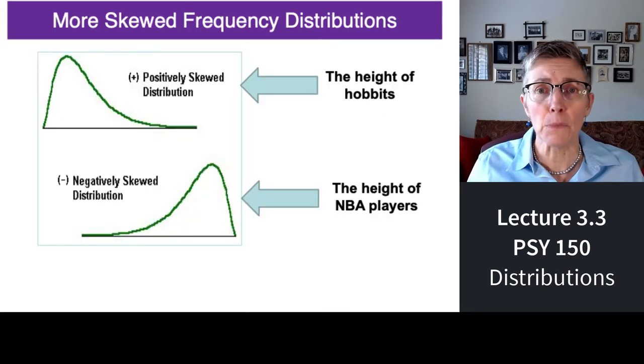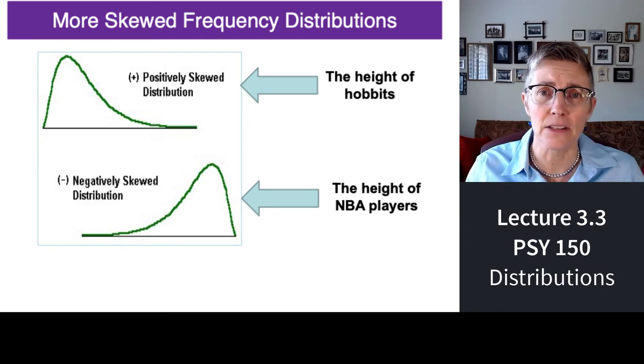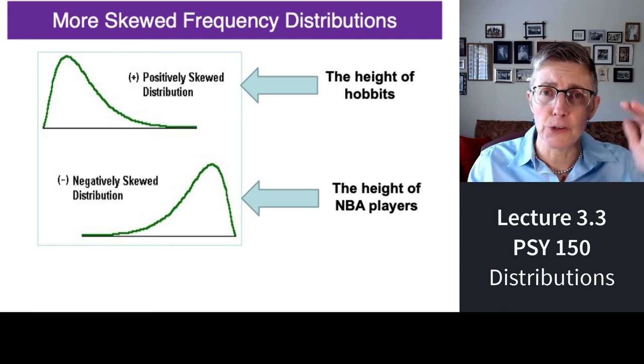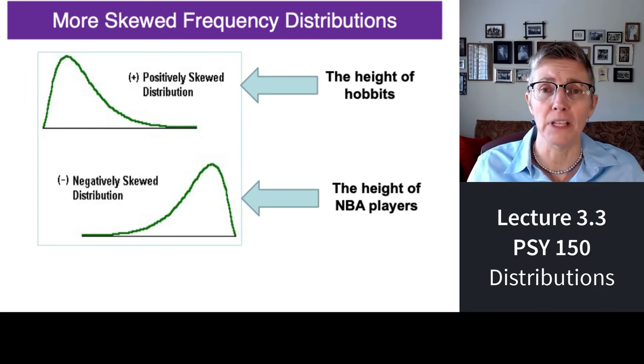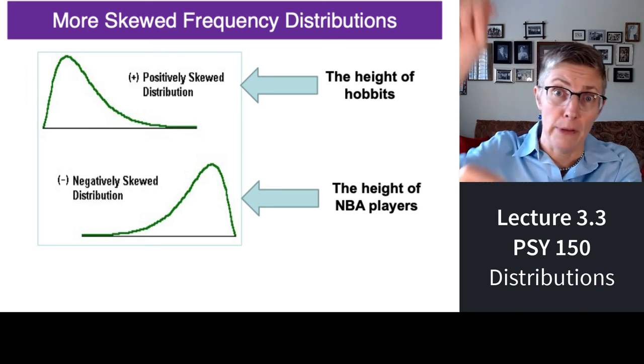More examples of skewed distributions. If I were to measure the heights of Hobbits, I'd have a skewed distribution where most of the measurements would be short. If I were going around and measuring the heights of NBA and WNBA players, that would be skewed. Everybody would be really tall.